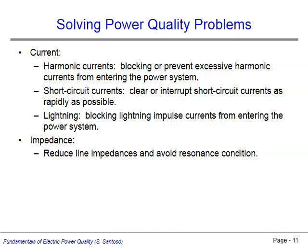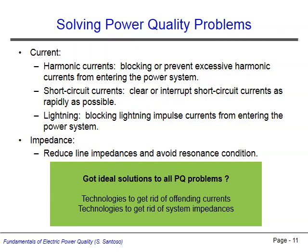Power quality problems can be mitigated in several ways. Filters or load requirements can be used to block harmonic currents from entering the system. Coordinated protective systems can be designed to ensure rapid interruption and clearing of short circuits. Protective devices can be installed to prevent lightning currents from entering the system. Or, line impedances can be reduced in order to minimize the voltage drops caused by these irregular currents.